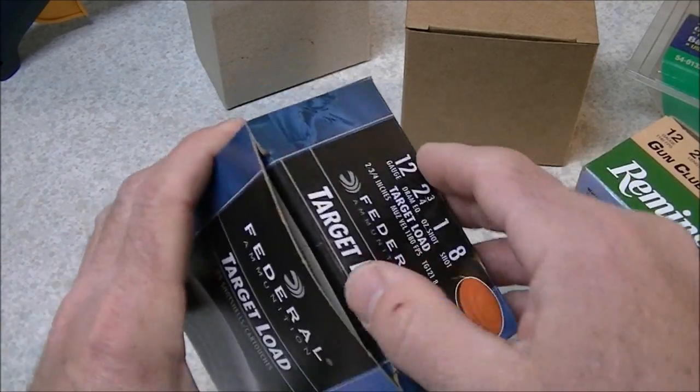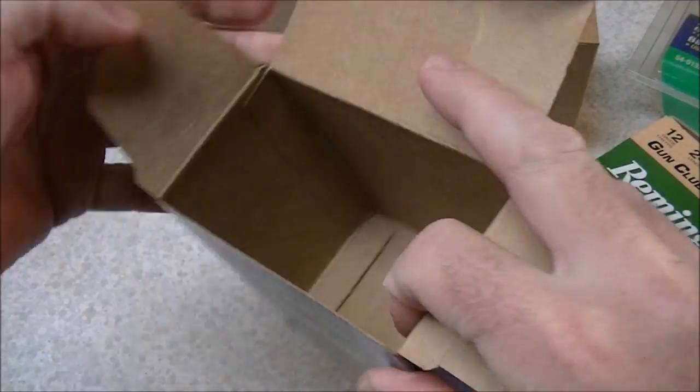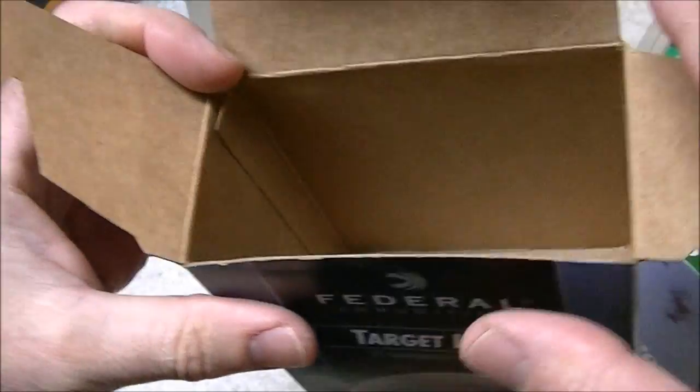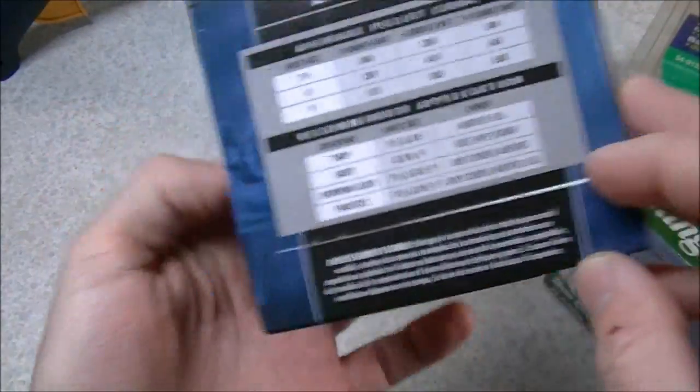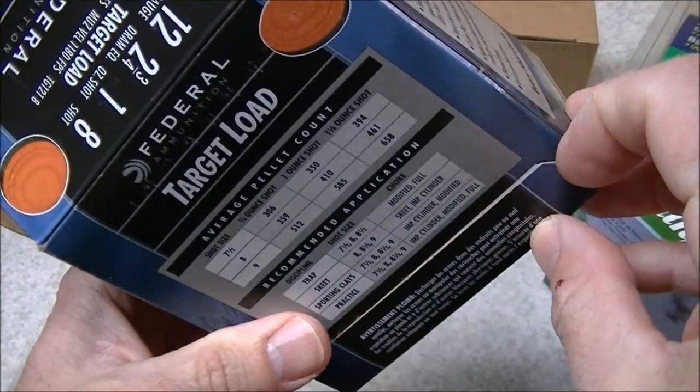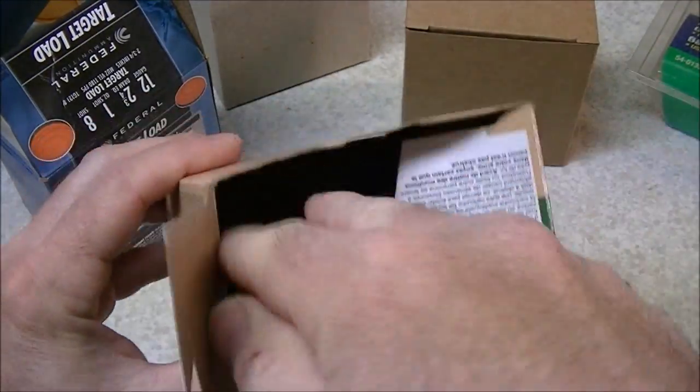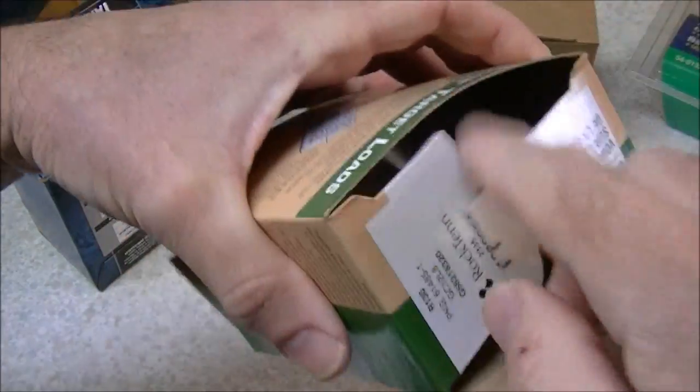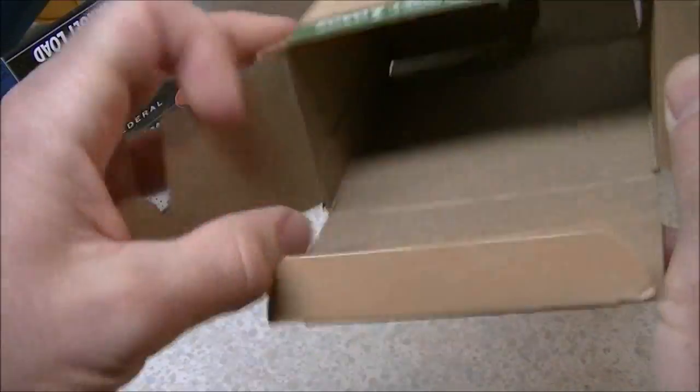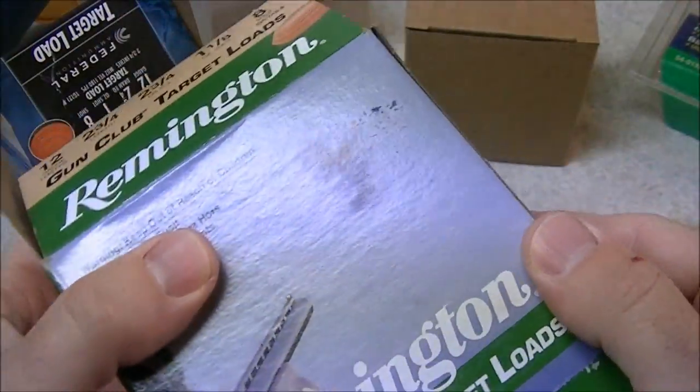Anyway, these boxes come in a couple of different styles or formats. These Federal boxes, they have a seam here that's glued and they have the bottom flap glued on right here. The Remington boxes are a little different. They have folded over flaps on both the top and the bottom and they only have one glued seam which is right here.